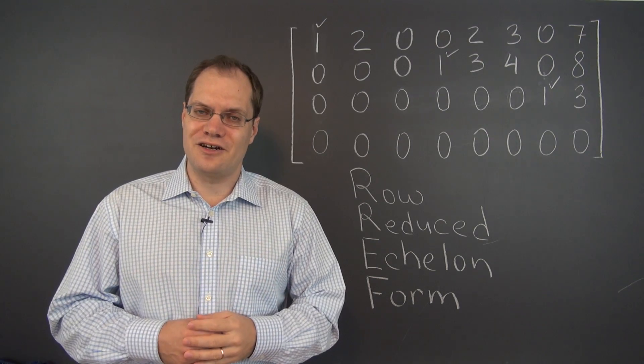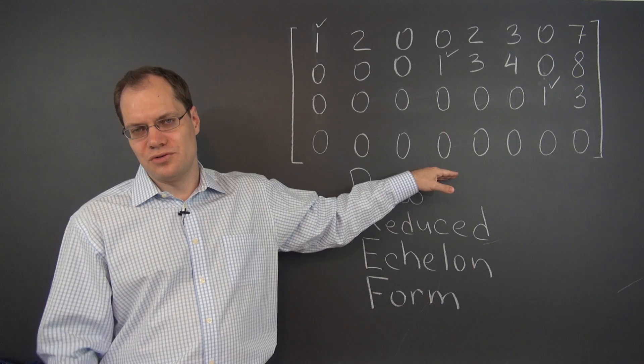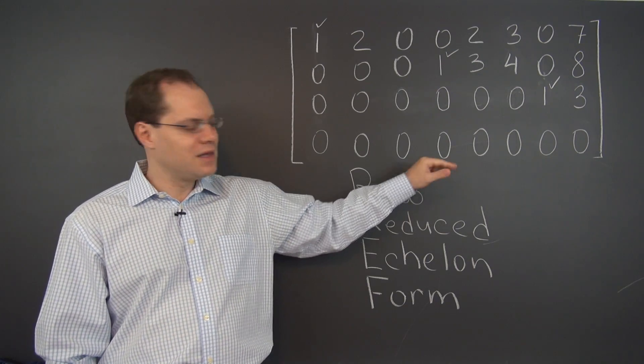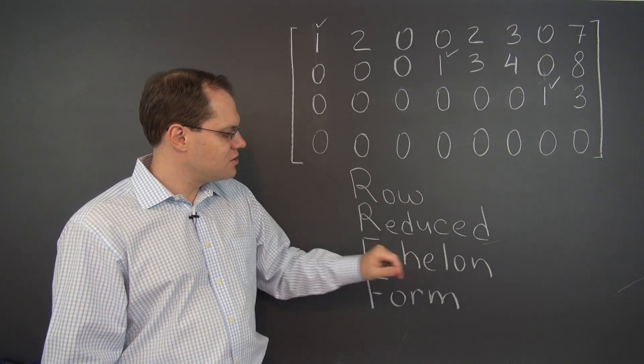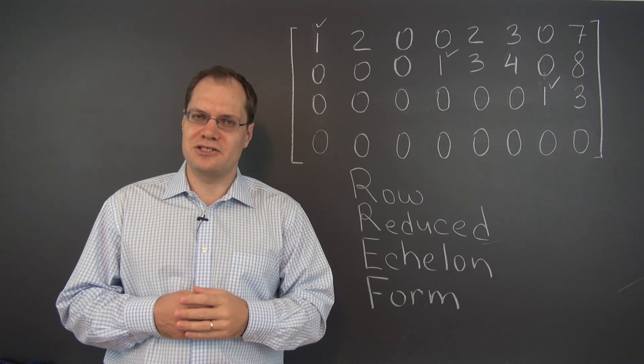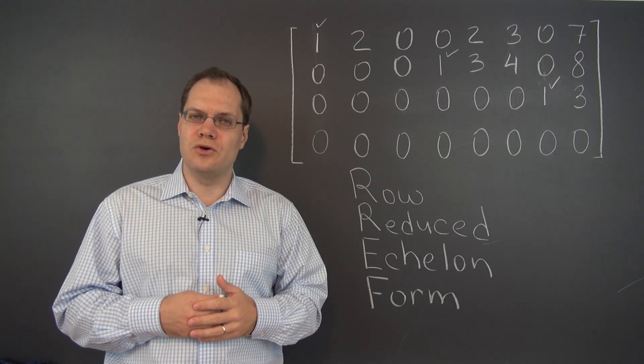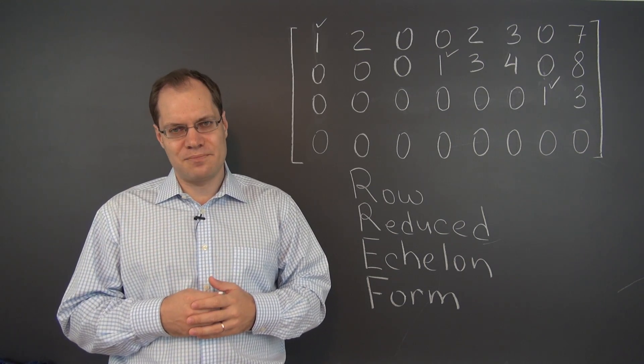So you have an intuitive understanding of what it is, but let me nevertheless give you the specific rules for row reduced echelon form, and that will also give me a chance to define these terms. There are two ways to look at row reduced echelon form, from the point of view of columns and from the point of view of rows. Let's start with a column perspective.